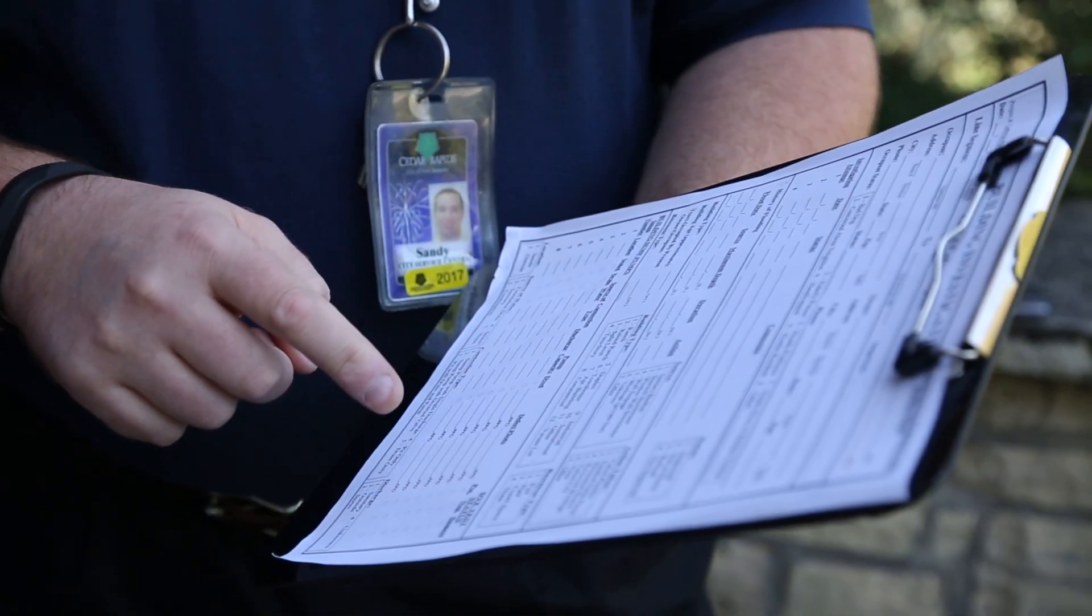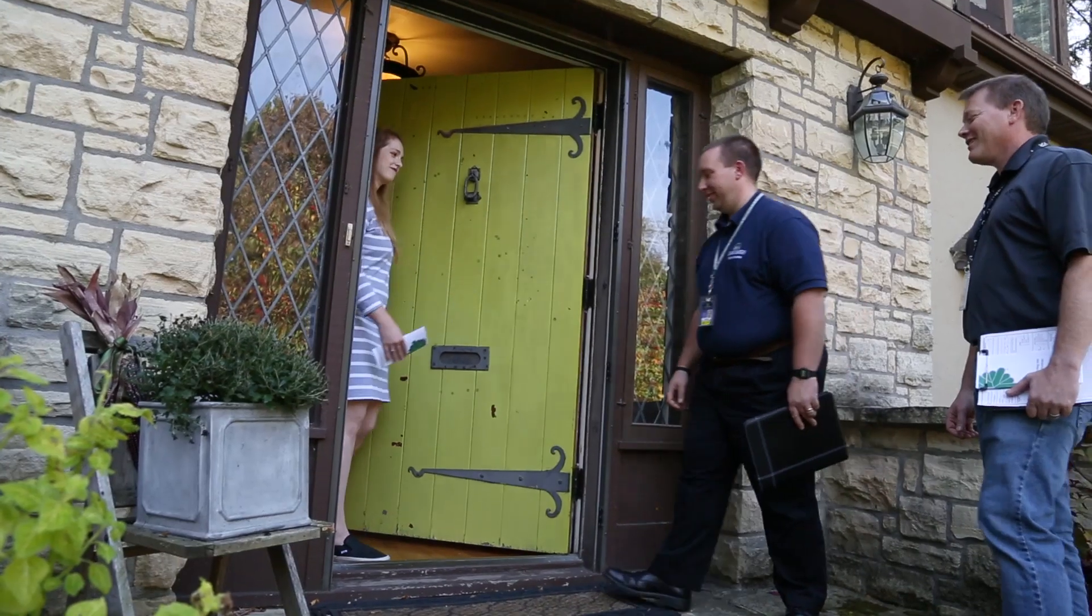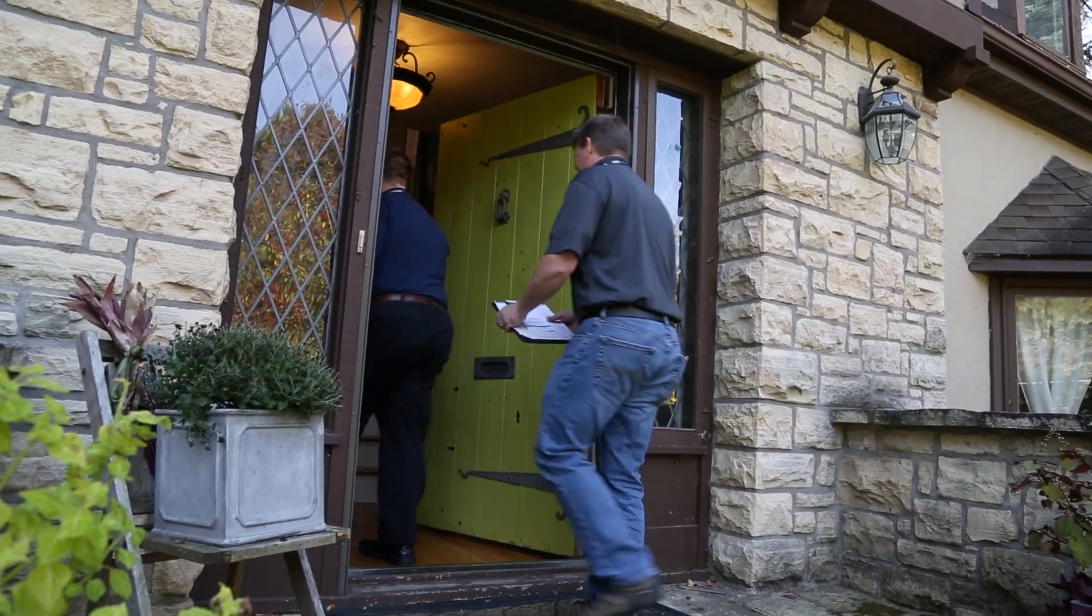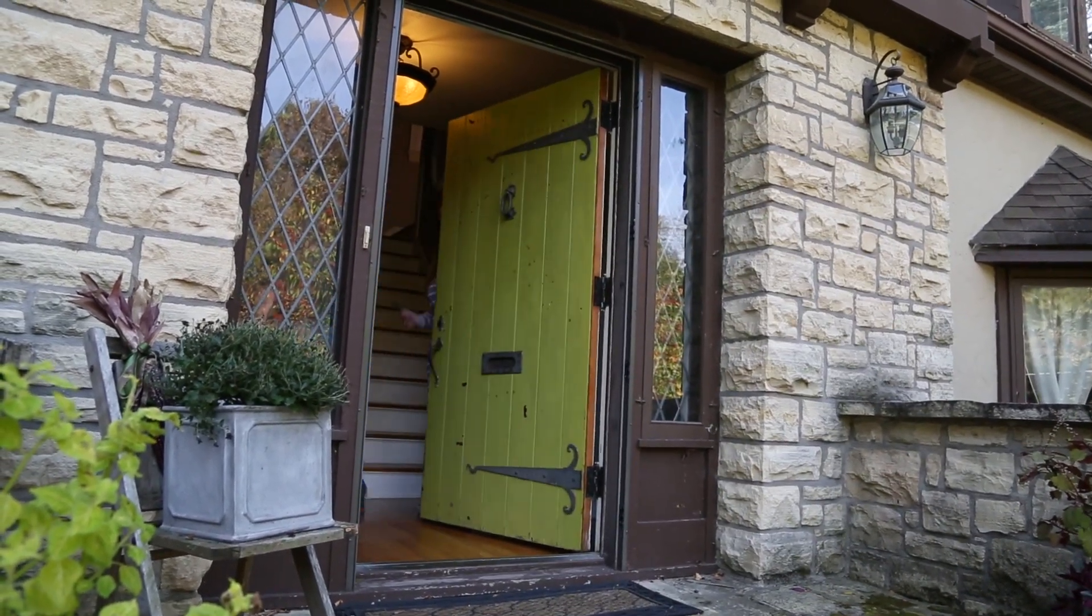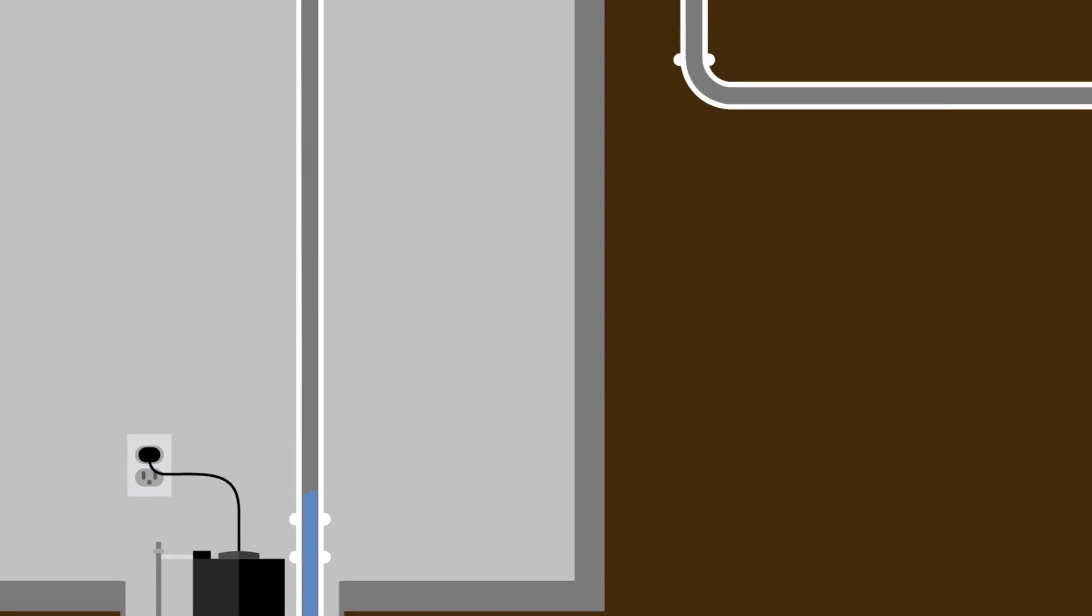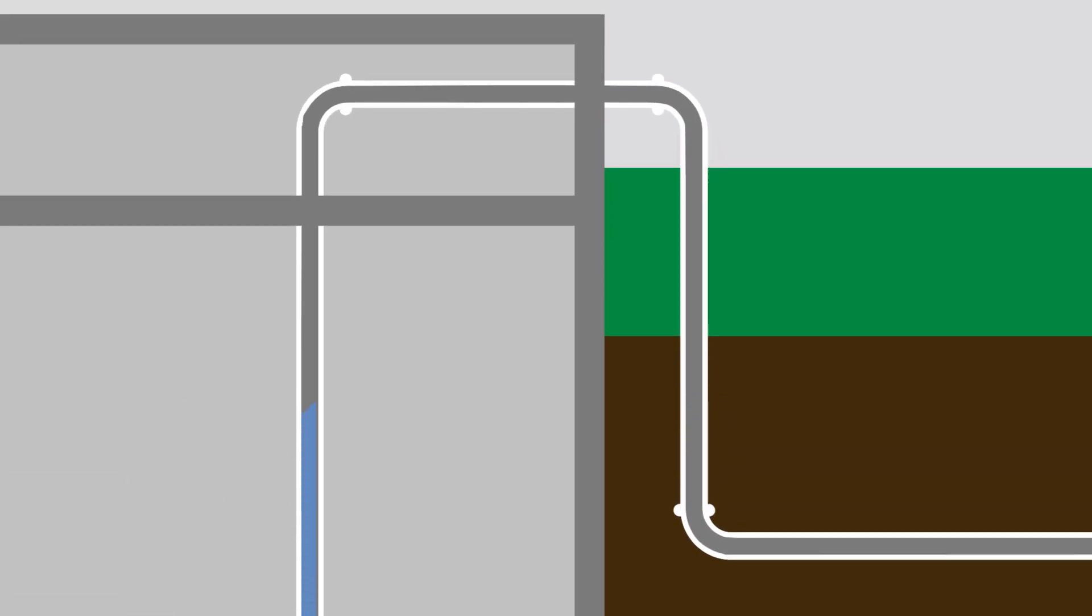A city inspector will quickly assess your connection and let you know if your sump pump is cross-connected to the sanitary sewer system. If your sump pump properly drains outside of your home, you're all set.